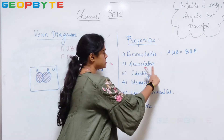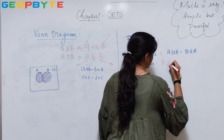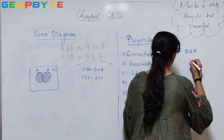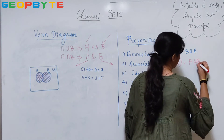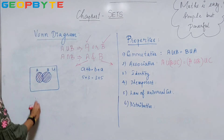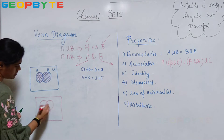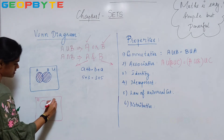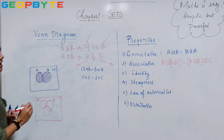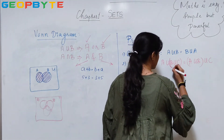Now, what is the associative property? This is: A union (B union C) is equal to (A union B) union C. So how will I verify it? Let us consider three circles for three sets A, B and C. Then, how will we do the operation? First, you have to do the operations inside the bracket, that is B union C.